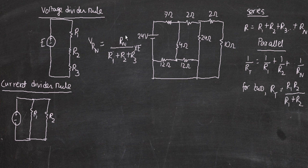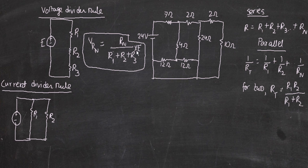The voltage divider rule is the first rule we're going to learn about. It's a really simple rule. The formula: if you want to find the voltage of R1, R2, or R3, then for example V_R2 equals R2 divided by the total resistance (R1 + R2 + R3) multiplied by the EMF, the total voltage E. Similarly, V_R3 equals R3 divided by (R1 + R2 + R3) multiplied by E.